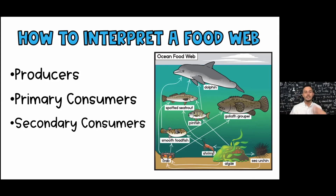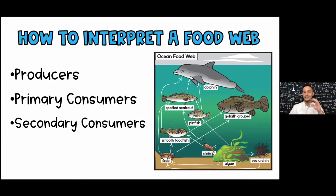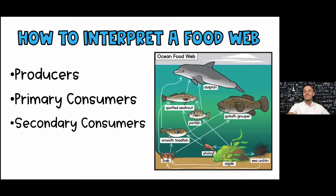Then we've got our secondary consumers. Secondary — we know second is coming second — those are the animals that eat the animals that eat the plants. The shrimp was our primary consumer, consuming the plant. Now, if you're at home and you're sharp, look and tell me what organism is the secondary consumer of the shrimp — what's consuming the shrimp? That's the smooth toadfish. The smooth toadfish also eats other things, but in this example you can see it eats the shrimp that eats the algae. So we've got our producers at the bottom, our shrimp as primary consumer eating the plant, and our secondary consumer eating the animal that eats the plant.